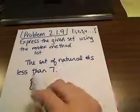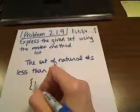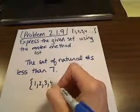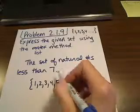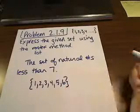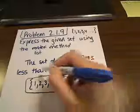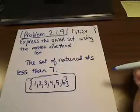And so if we're trying to denote the set of natural numbers less than 7, and we're listing it, then we would just write them out. We would say 1, 2, 3, 4, 5, and 6, but we're not going to include 7 because they said less than 7. And then we just end it with a squiggle bracket. And that's all there is to this particular problem. That's the answer that they're wanting.